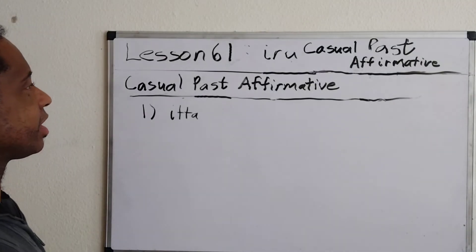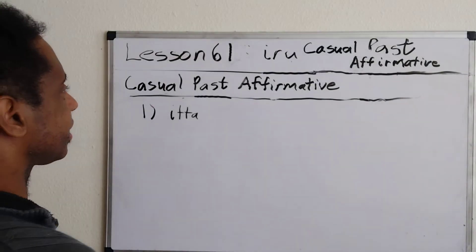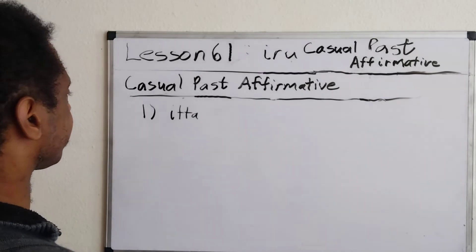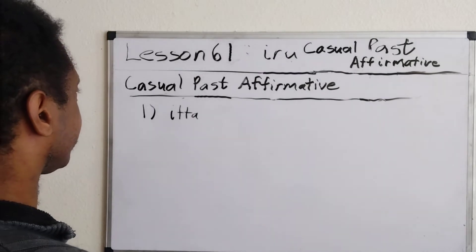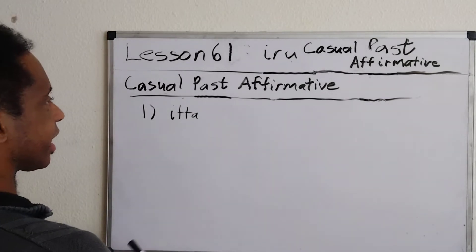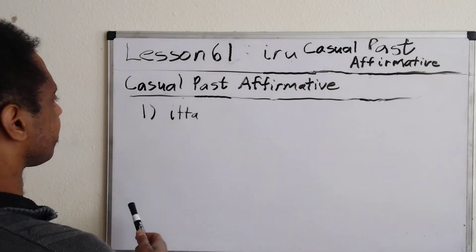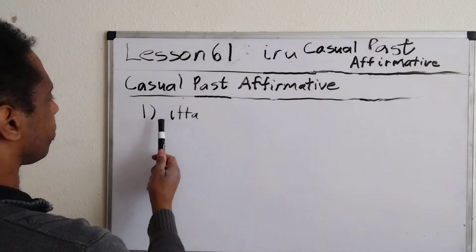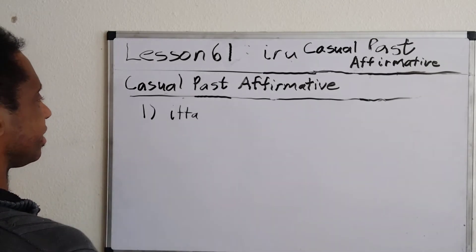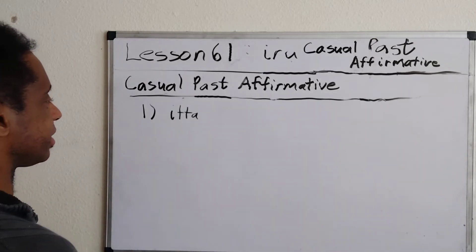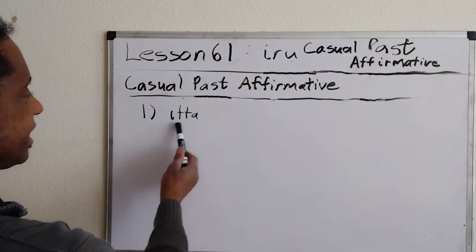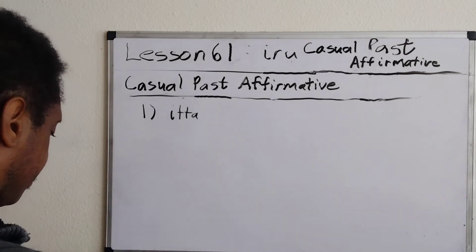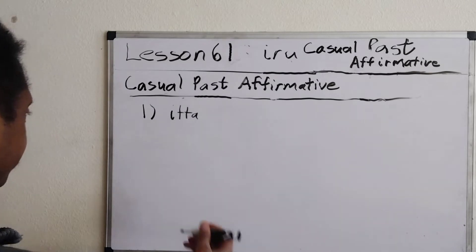Lesson 61: how to conjugate 'iru' into the casual past affirmative. To conjugate 'iru' into the casual past affirmative, all we do is write 'ita.' You just have to memorize it — 'ita.' Okay, so let's go over an example.